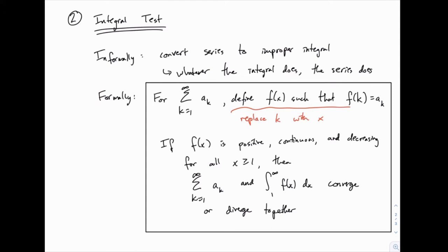You'll see what I mean as we do examples. If this function that you define is positive, continuous, and decreasing — three conditions we have to prove — for all values of x greater than or equal to 1, then the series and the improper integral of that function from 1 to infinity converge or diverge together. Meaning that if we know the improper integral from 1 to infinity converges, then the series converges as well.